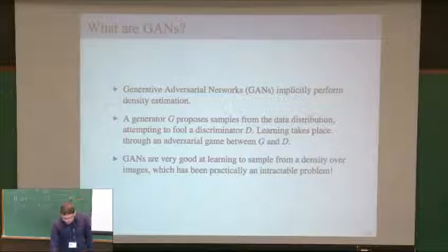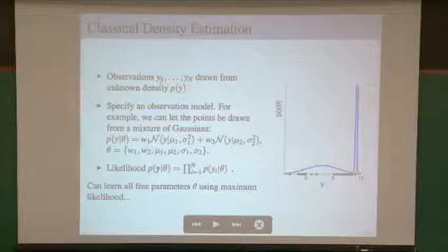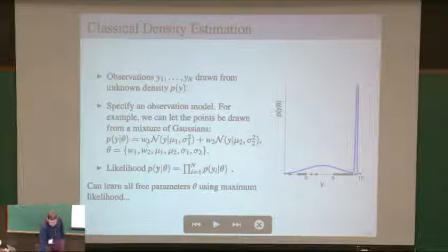Before we get into the details of GANs, let's first consider a more classical approach to density estimation. Suppose we have observations Y1 up to Yn drawn from some unknown density P_Y. We want to estimate this density, so we'll specify an observation model — for example, we could assume that the points were drawn from a mixture of Gaussians. Our goal is to learn the parameters theta: the weights, the means mu1 and mu2, and the variances sigma1 squared and sigma2 squared.